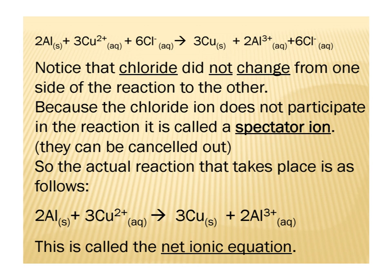If we look at our total ionic equation a little bit more closely, we see that we have chloride ions both on the reactant side and the product side. Therefore, we know that the chloride ion doesn't change from one side of the reaction to the other. They're what's called spectator ions because, as spectators in a sports game, they sit there and watch the action on the field. So these spectator ions can be cancelled out, just like we do in math — we can cancel the six chlorides on the reactant side and the six chlorides on the product side.